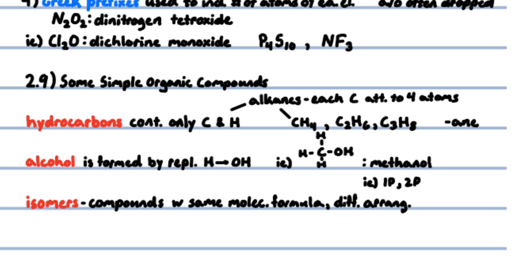Compounds with the same molecular formula but different arrangement of atoms are called isomers. For example, 1-propanol and 2-propanol are structural isomers.